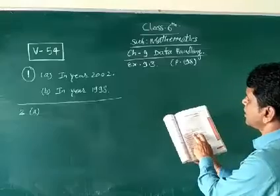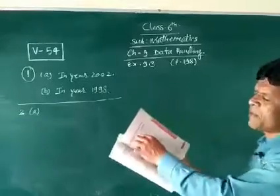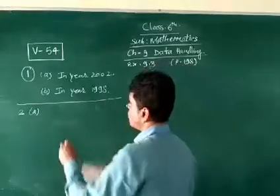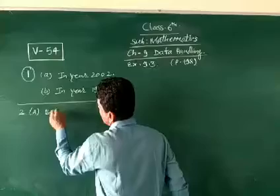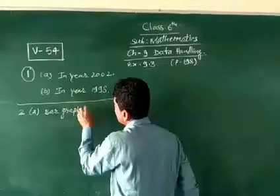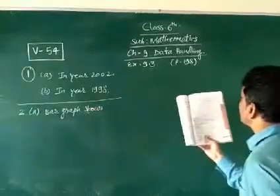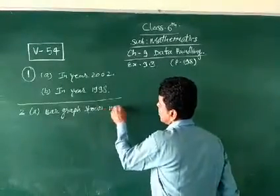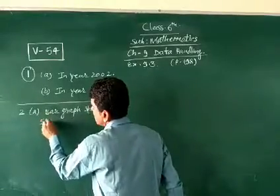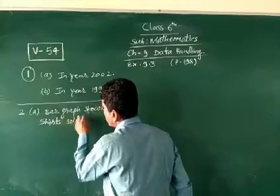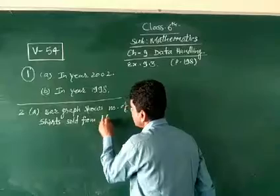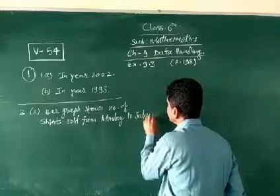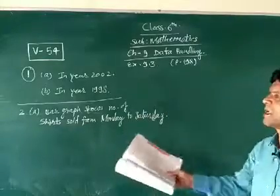What information does the above graph give? This graph shows the number of shirts sold from Monday to Saturday. This is the answer. We will write it.